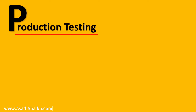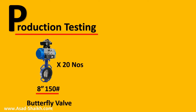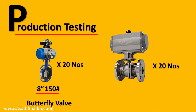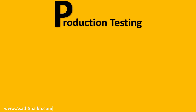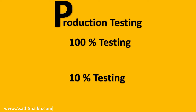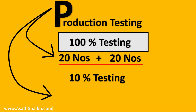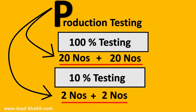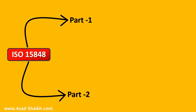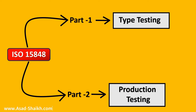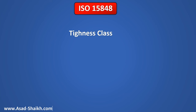The opposite of type testing is production testing. Imagine you have 20 butterfly valves — say 8-inch 150 rating — and 20 ball valves, all 2-inch 600 rating. For production testing, you first decide whether it will be 100% testing or only 10% testing. If 100%, all 20 of both valve types must be tested. If only 10%, then just 2 valves of each type are selected, but they must be chosen at random. ISO 15848 is divided into Part 1, which deals with type testing, and Part 2, which deals with production testing.